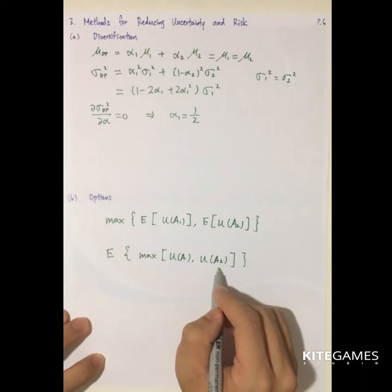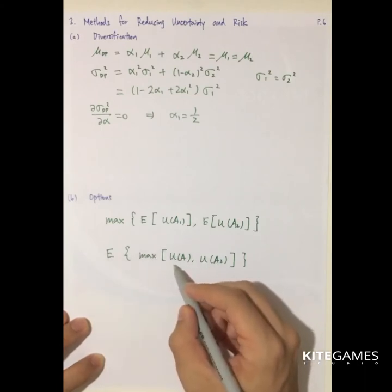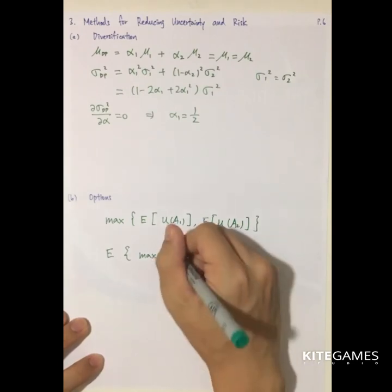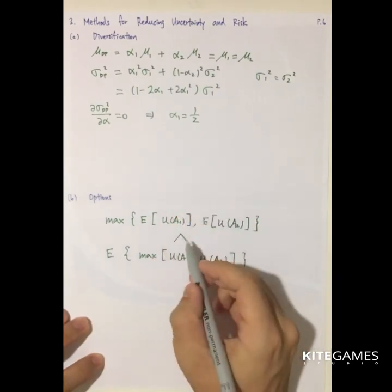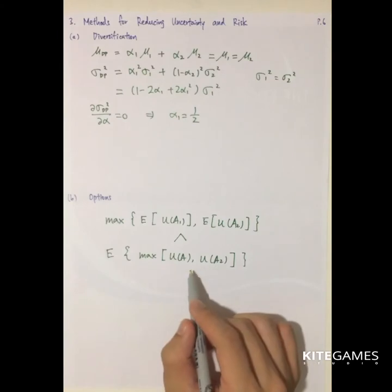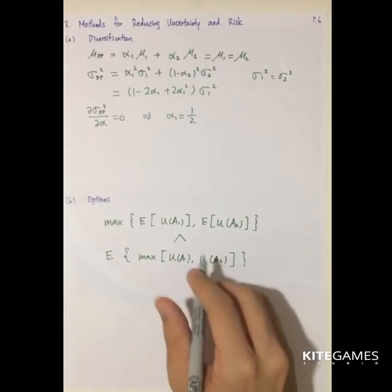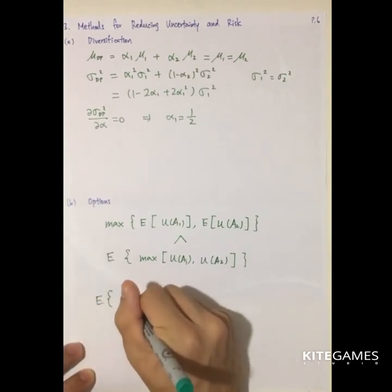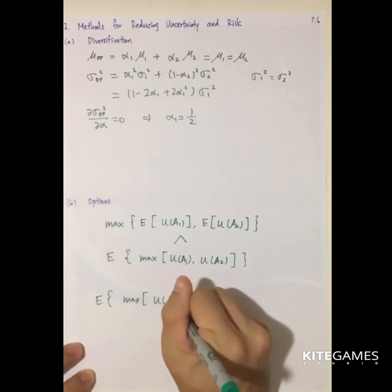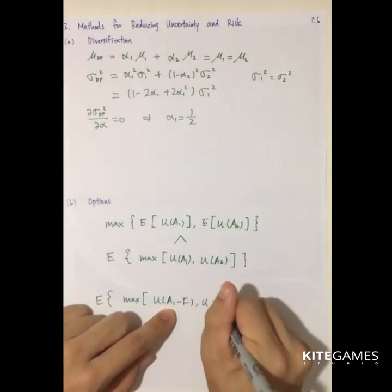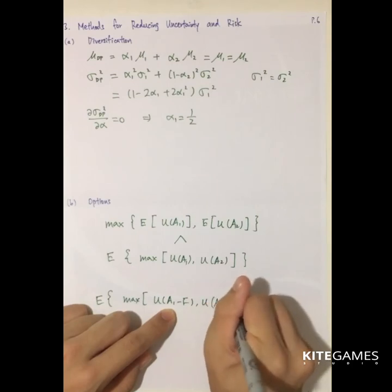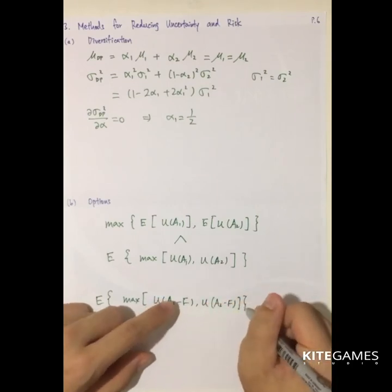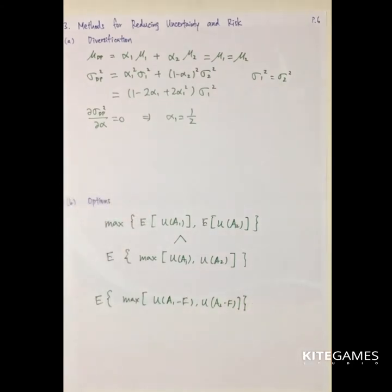Then if you use the option, what you get is the expected value of the maximum of the utility. So clearly, the second is greater than the first one. So that's why many people are willing to pay the price to buy the options, such that the expected value of the maximum return of share minus the cost is still higher than the naked position.